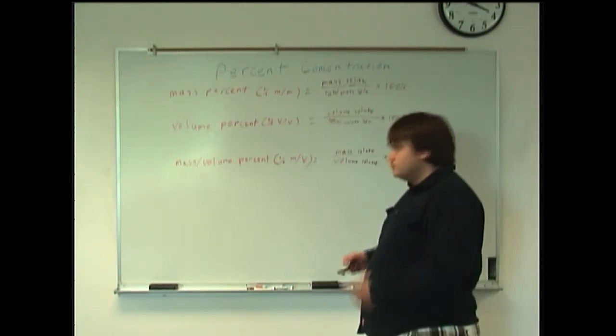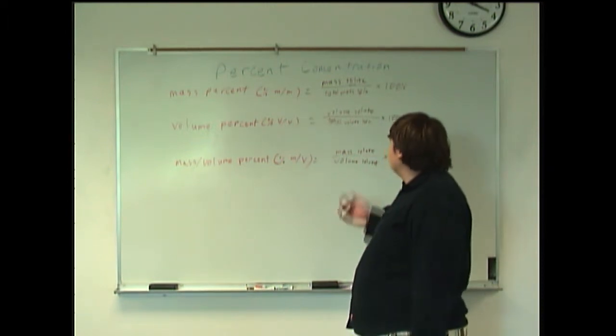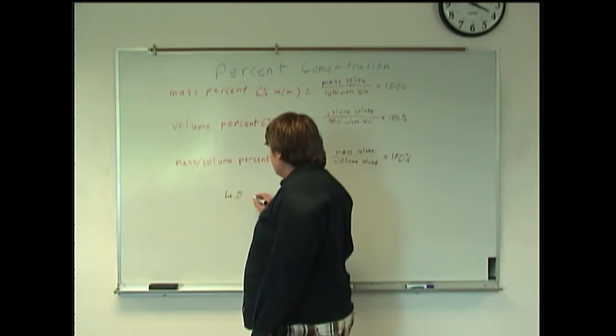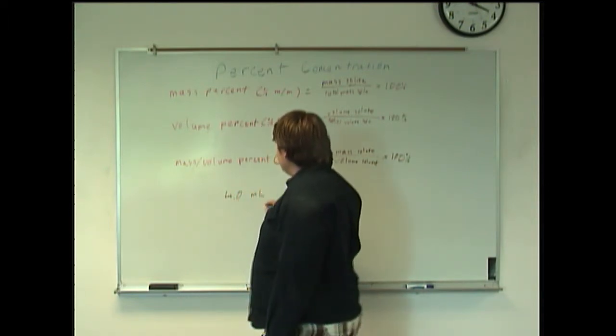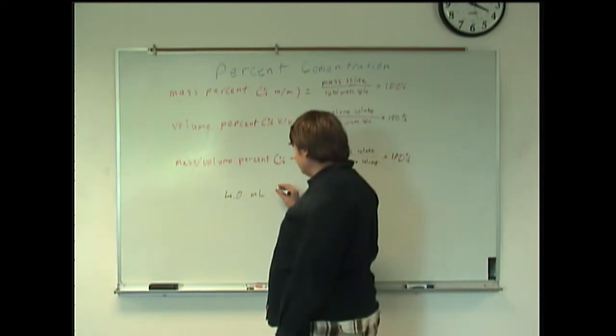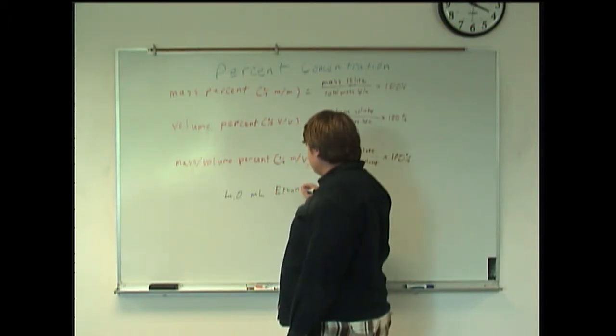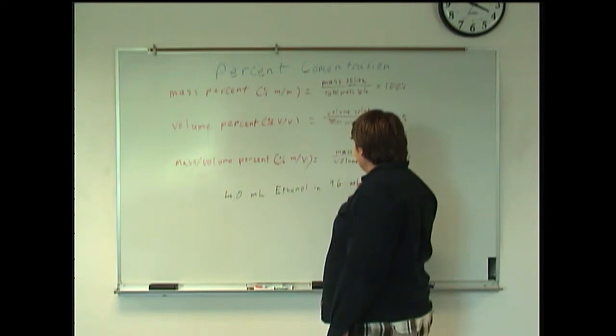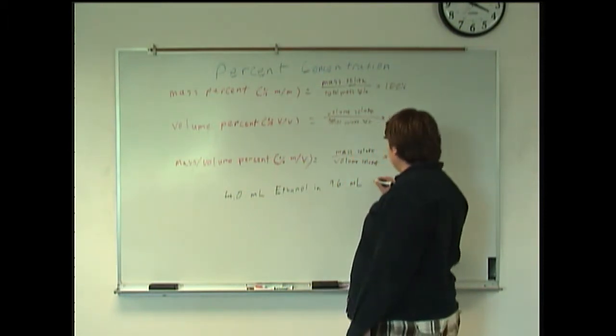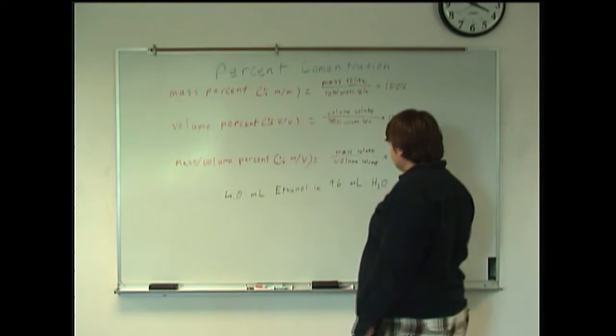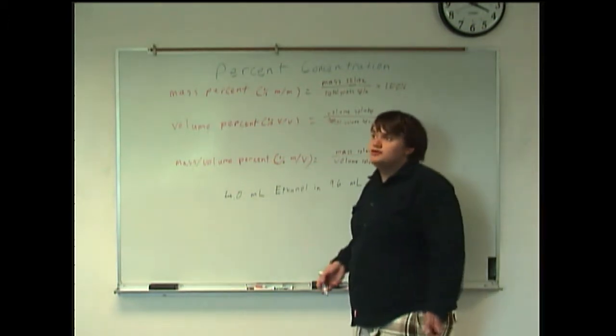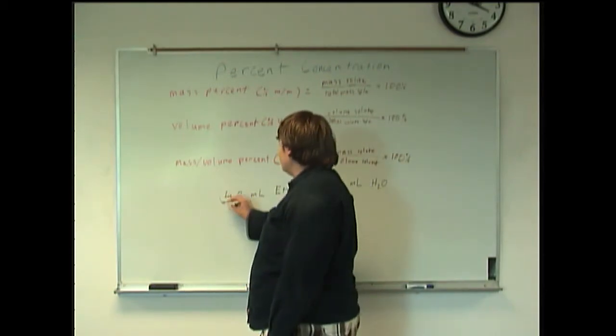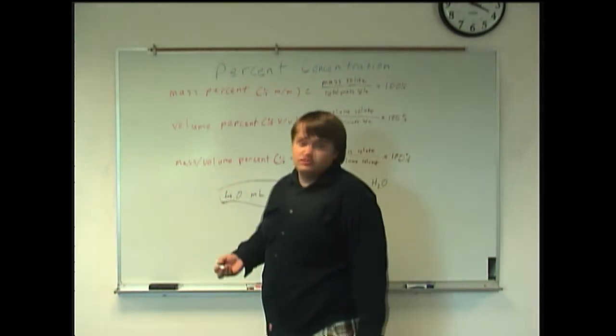So in this case, times 100%. We're going to say we put four milliliters of ethanol in 96 milliliters of water. We'd approach it in a similar way. We'd approach the mass percent. We take the volume of our solute, the ethanol in this case.